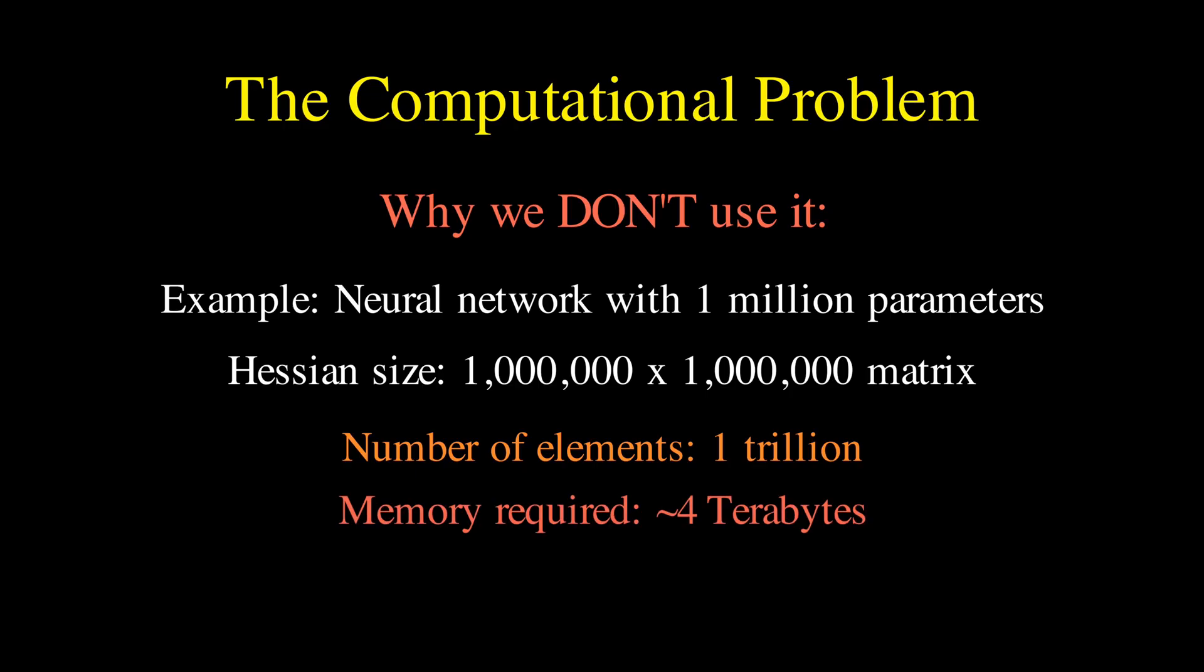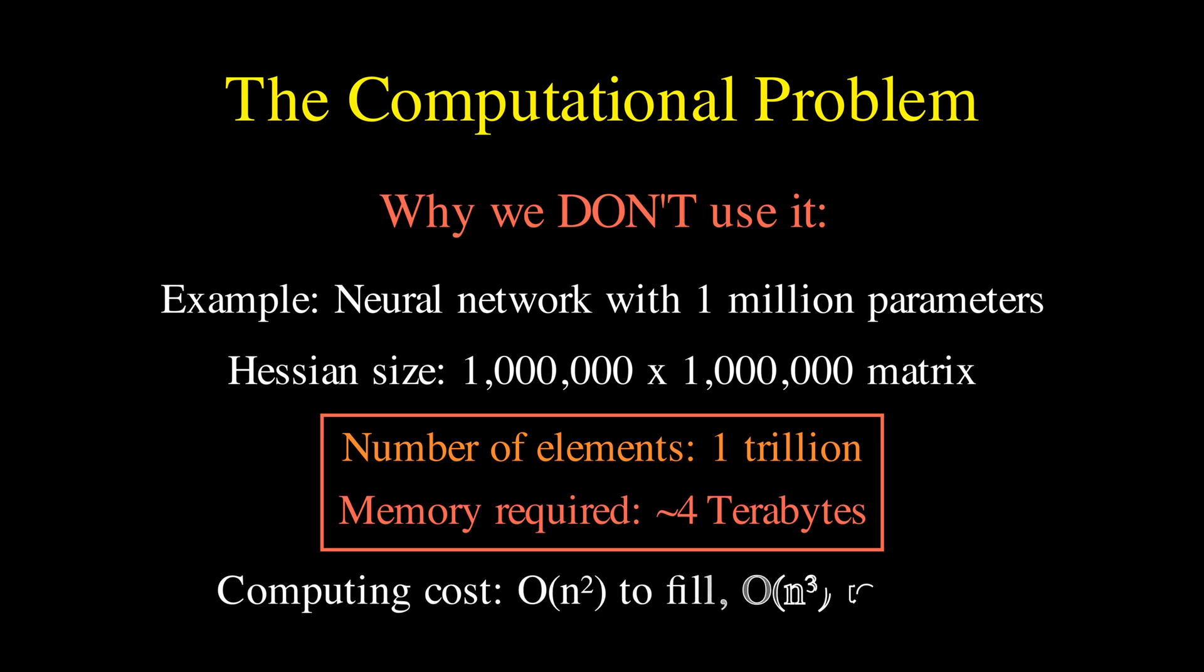And just storing this matrix would require 1 trillion numbers, which is about 4TB of memory. And that's just to store it. Computing all those second partial derivatives is also incredibly expensive. We require n squared operations to fill in the matrix. And then, if you want to use it in Newton's method, you need to invert the matrix, which takes n cubed operations, and for a million parameters, it's completely infeasible.